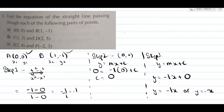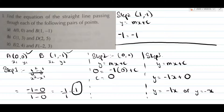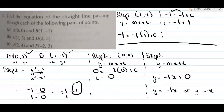Now I want to show you that you get the same answer using the other coordinate. So instead of using (0,0) in step 2, we will repeat step 2 using (1,-1). y equals mx plus c: instead of y write minus 1, instead of m write minus 1, instead of x write 1, plus c. So minus 1 equals minus 1 plus c, therefore c equals minus 1 plus 1, which gives c equals 0. So you can use either coordinate — both will yield the same answer.